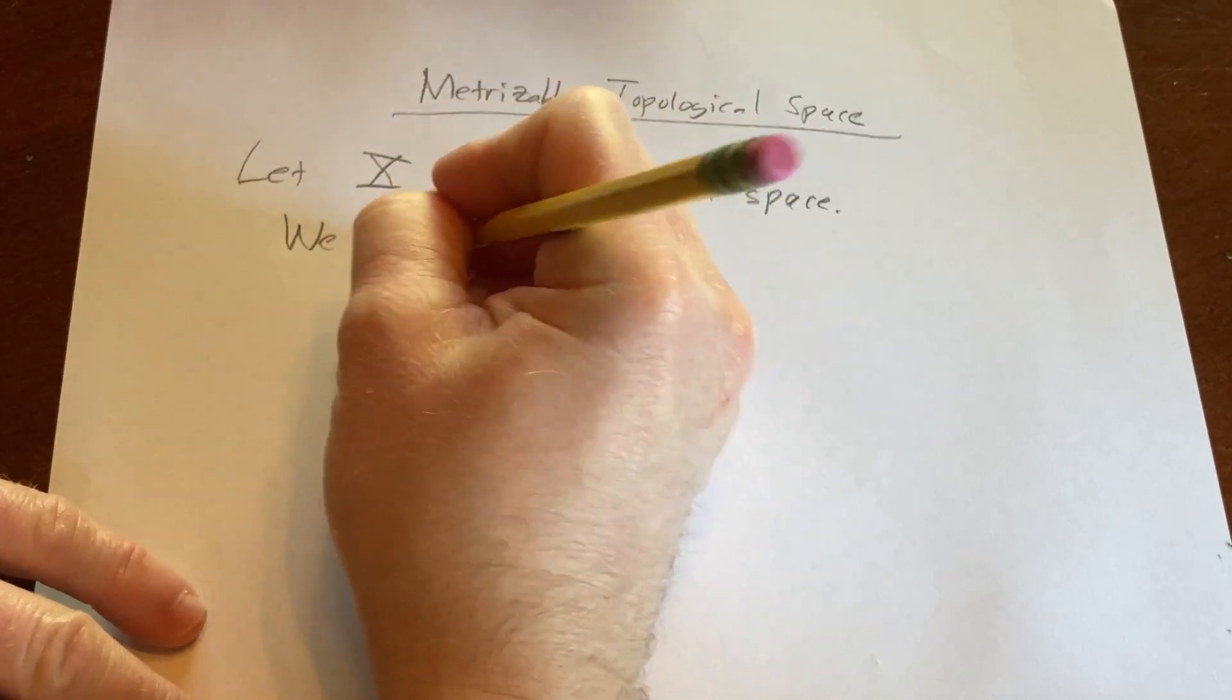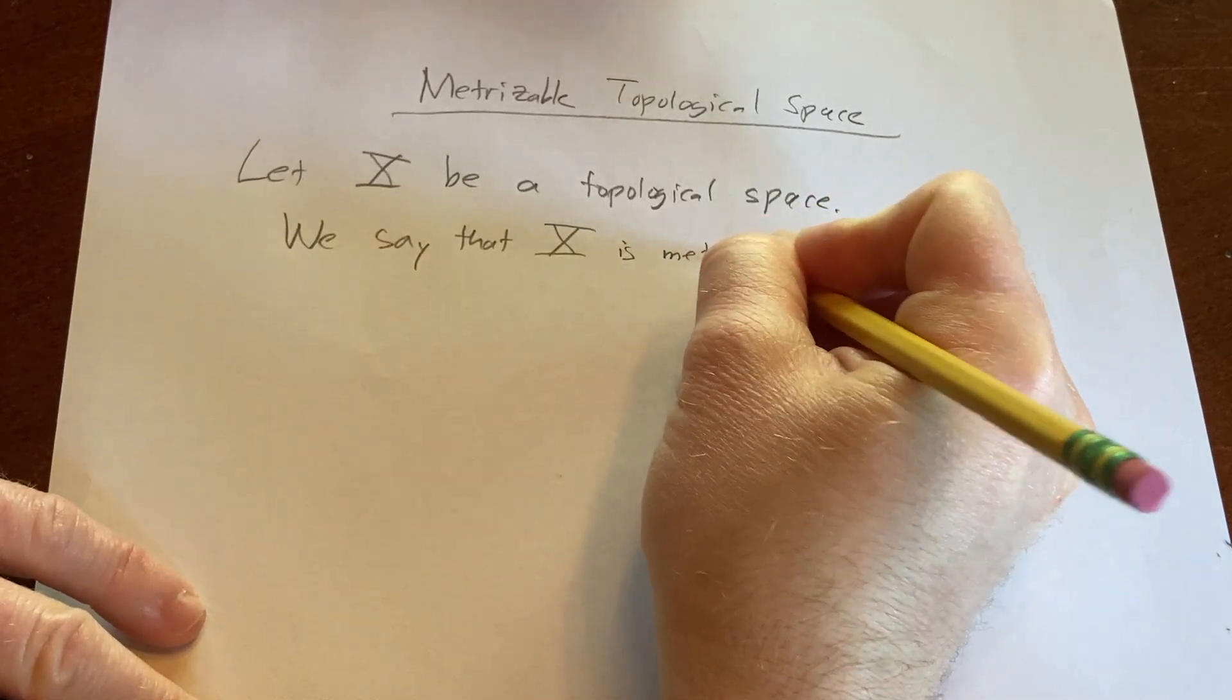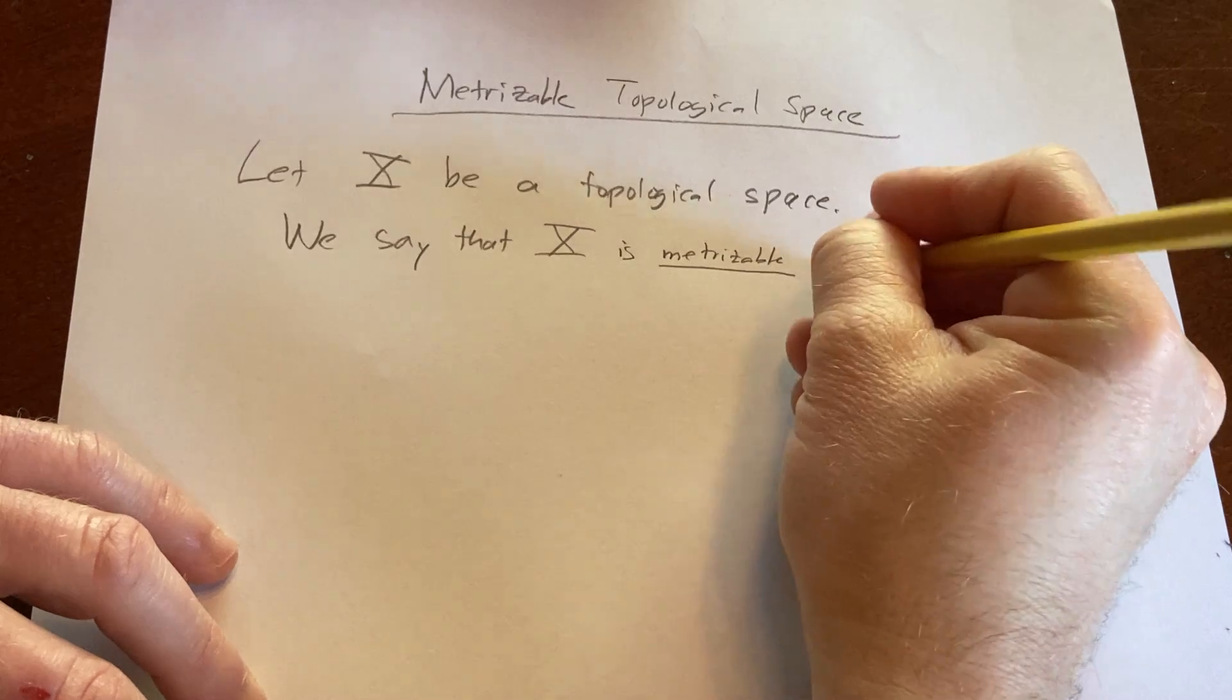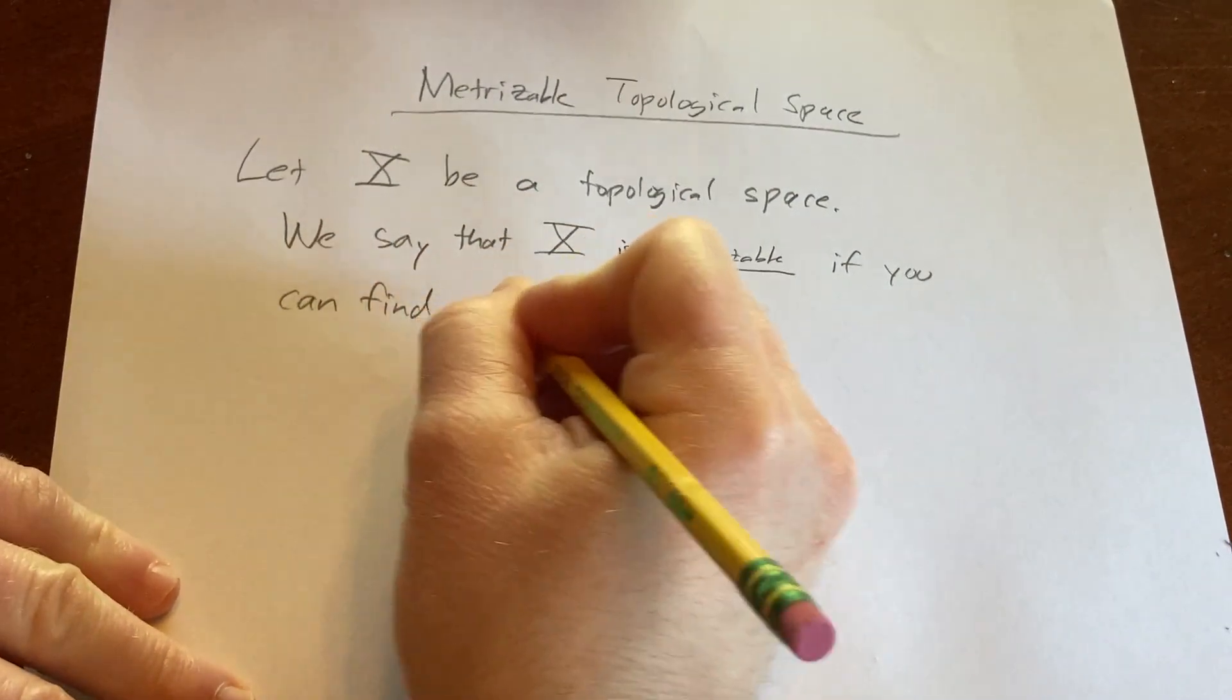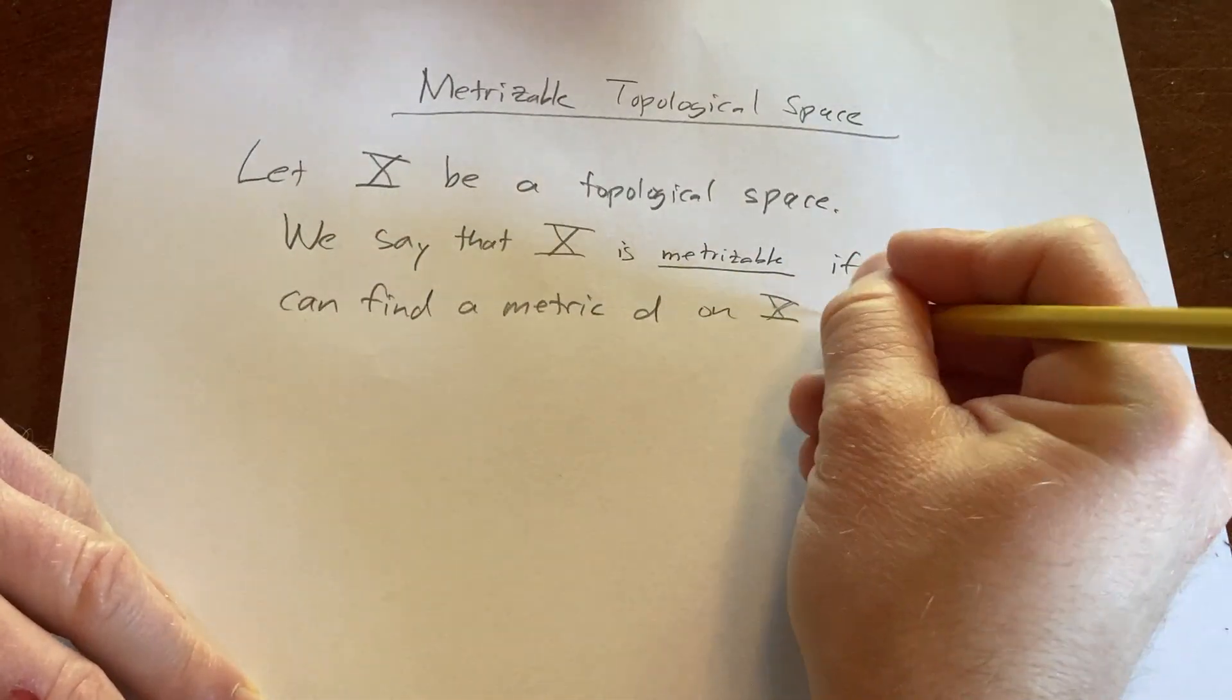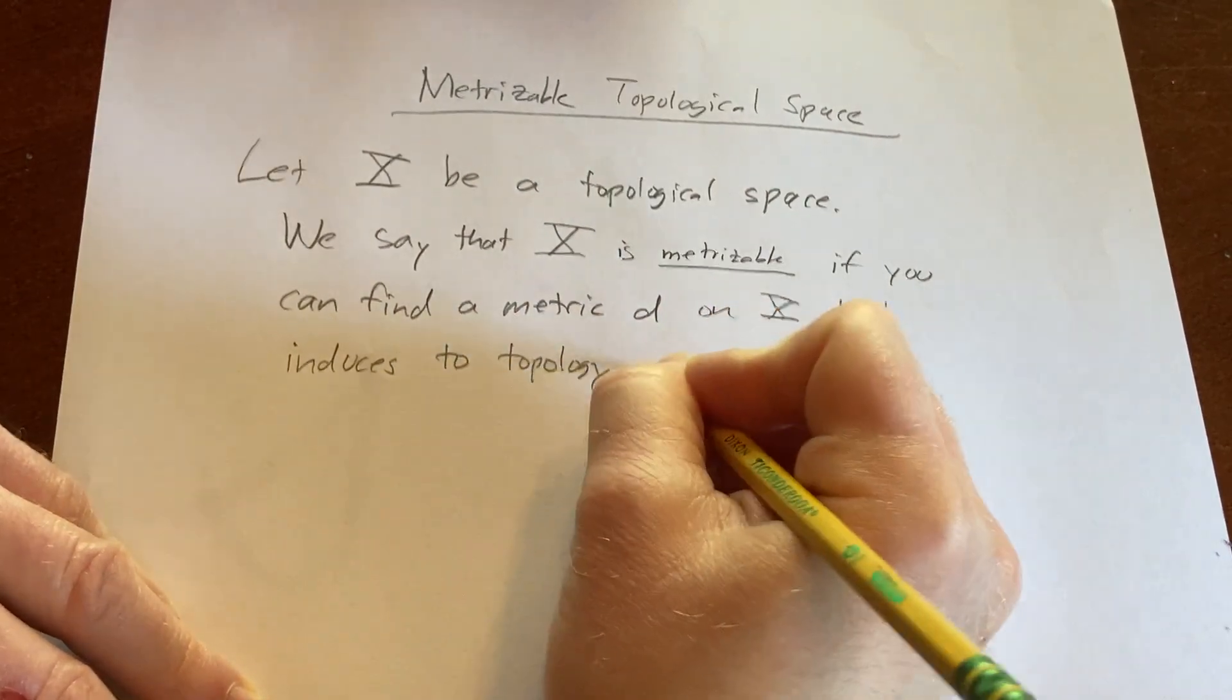We say that X is metrizable if you can find a metric d on X that induces the topology of X.